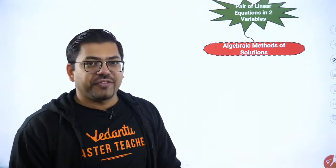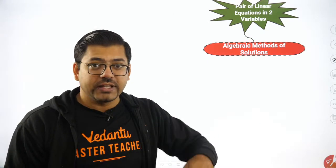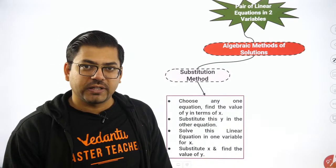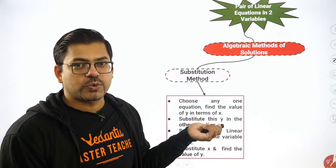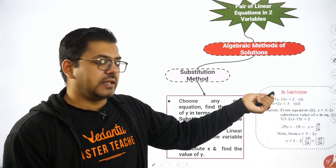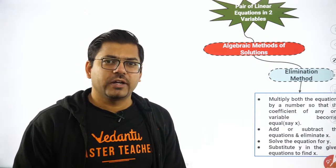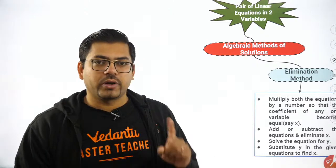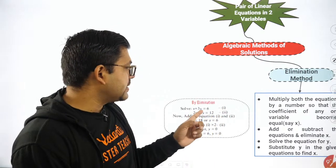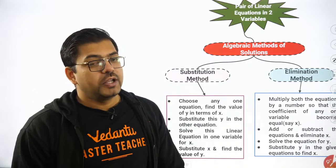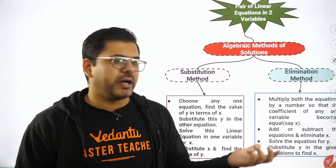Moving on — for algebraic solutions of linear equations in two variables, you have two methods. The first is the substitution method — the most basic one, widely known. The second is the elimination method, also widely known. One important note: cross multiplication has been removed from the syllabus this year. So you only need to focus on substitution and elimination.